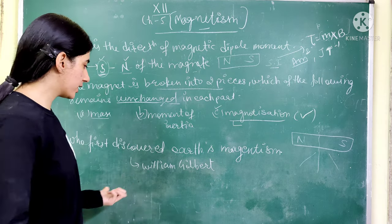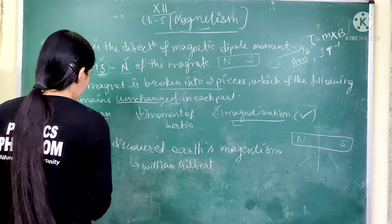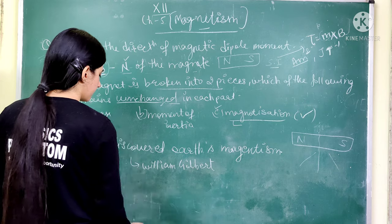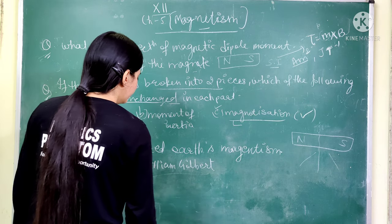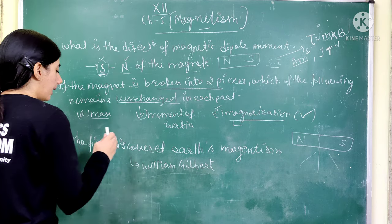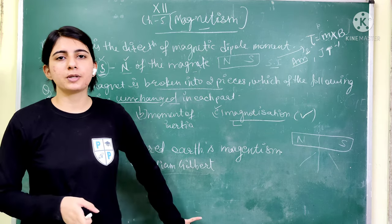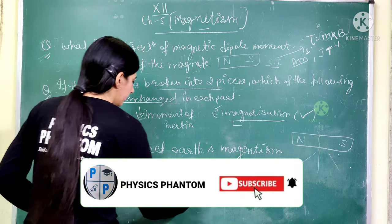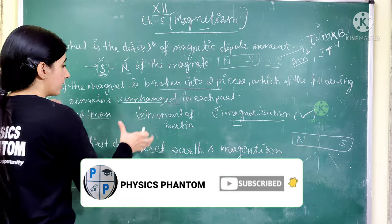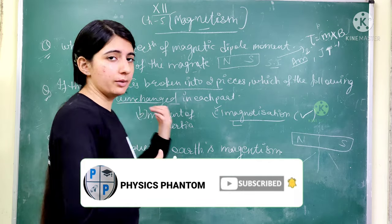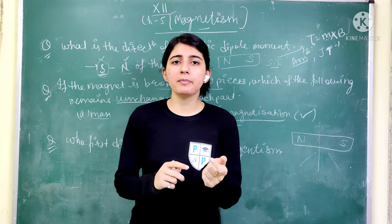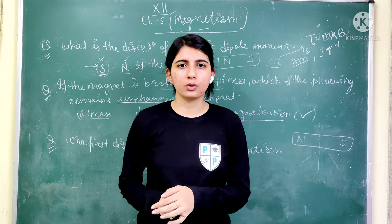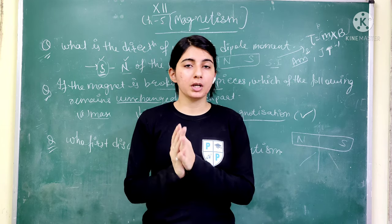According to the exam question, the answer is only one: who first discovered Earth's Magnetism? The answer is William Gilbert. This was an important question of Magnetism. After that, the third part of this chapter is the angle of dip, which I am going to explain in depth.